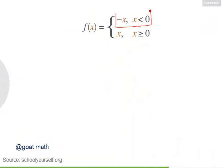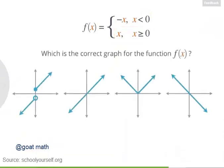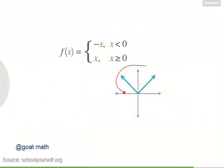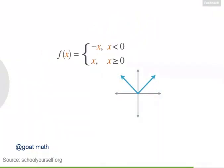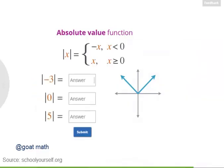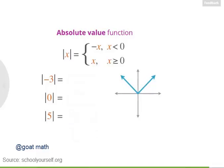Let's look at one final piecewise function. Let's define f of x as equaling minus x for all x less than 0, and as equaling x for all x greater than or equal to 0. Which of these is the correct graph for this function f of x? You might have seen this piecewise function before — it's called the absolute value function, and it's typically written with vertical bars on either side of the input. The absolute value function is a piecewise function that doesn't change 0 or positive numbers, but gets rid of the minus sign in front of negative numbers, making them positive. So the absolute value function tells you the magnitude of a number — how big it is — without worrying about whether the number is positive or negative.